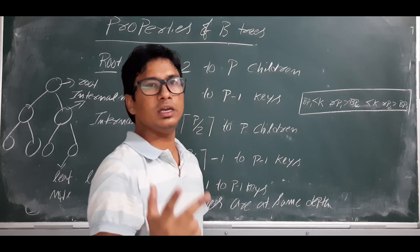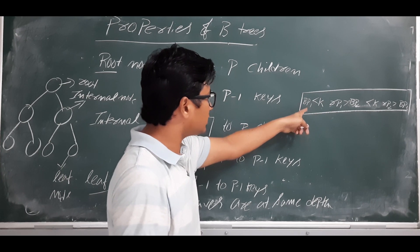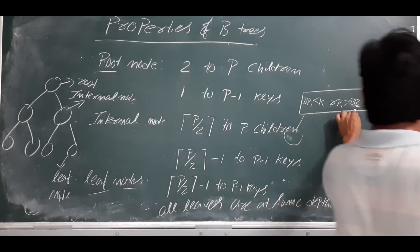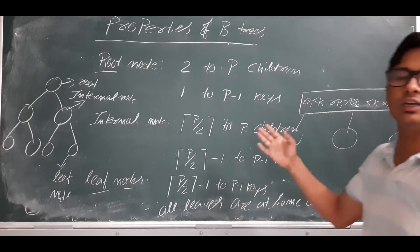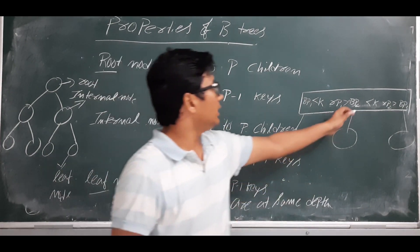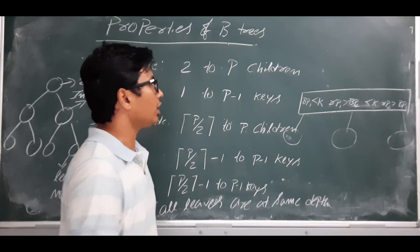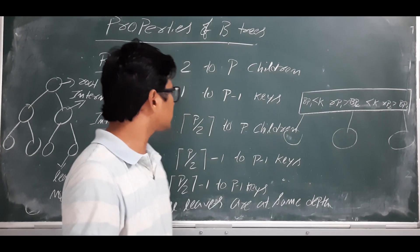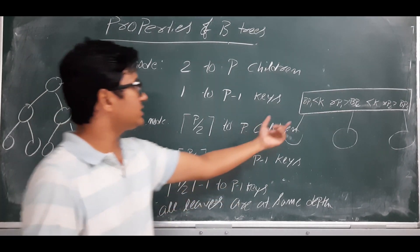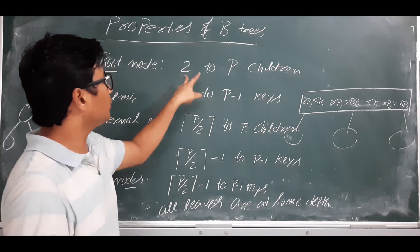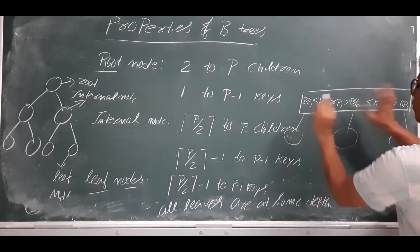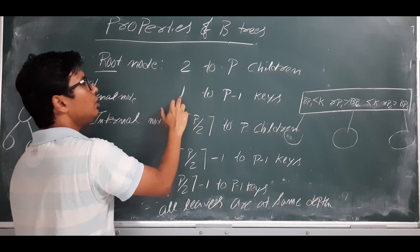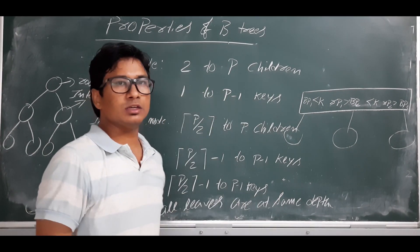In the structure, we have three block pointers and two key-record pointer pairs. The block pointers indicate how many children a node can have — each block pointer connects to another node. If you have n block pointers, you will have n minus one key-record pointer pairs. So if you have two block pointers, you can have only one key-record pointer pair.